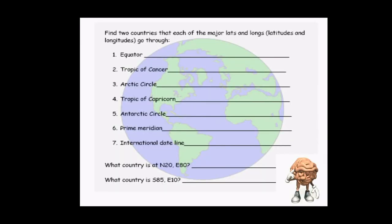Next, you are supposed to find out two countries in which the following latitudes and longitudes pass through. So, just check your atlas. Take page number 99 and 100 in your student atlas. And refer which two countries pass through equator. Note it down in your notebook. The same way, Tropic of Cancer, Arctic Circle, Tropic of Capricorn, Antarctic Circle, Prime Meridian and International Dateline. Next, take your ruler. Just measure where is 20 degree N and 80 degree E. The intersecting point will give you which country it belongs to. Note it down in your notebook. The same way, 85 degree South and 10 degree East, which country it belongs to.